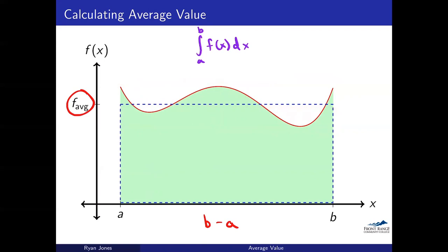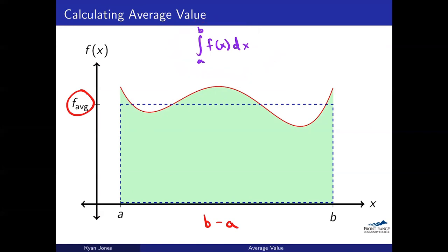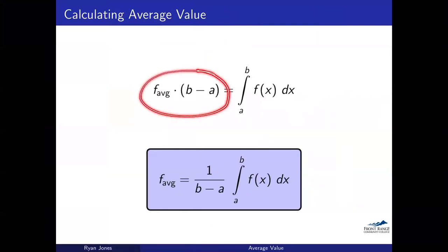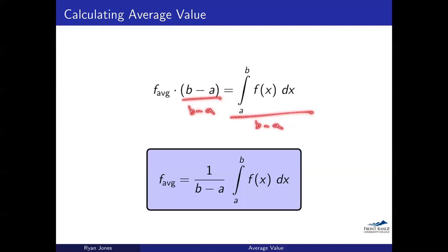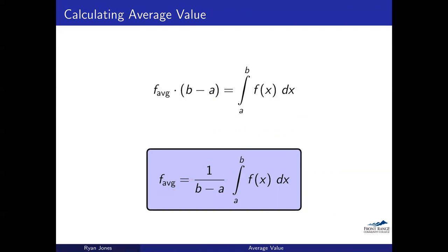So we recognize that the integral colored in green equals the area of the rectangle, which is f-average multiplied by b minus a. Since those have to be equal, if I take f-average and multiply it by b minus a, I get the rectangular area equal to the integral. We're trying to find f-average, so we divide both sides by b minus a. Since a and b are both constants, we leave it outside the integral, and the average value of a function is given by one over b minus a multiplied by the integral from a to b of that function.